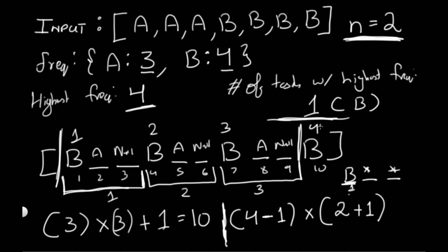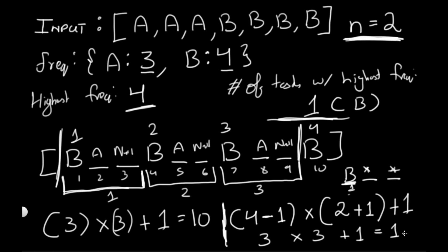The last term accounts for how many tasks share the highest frequency. If two tasks share the highest frequency, that number becomes two. So for our example: (4−1) × (2+1) + 1 = 3 × 3 + 1 = 10, which is correct. We can use this generic formula to get our answer.